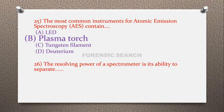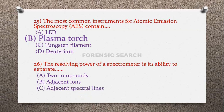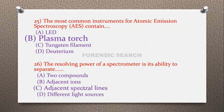Question 26: The resolving power of a spectrometer is its ability to separate — option A: two compounds, option B: adjacent ions, option C: adjacent spectral lines, option D: different light sources. The correct answer is option C — the resolving power of a spectrometer is its ability to separate adjacent spectral lines.